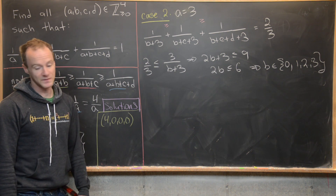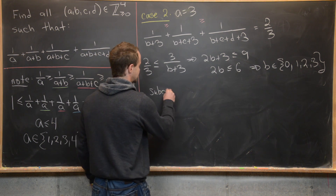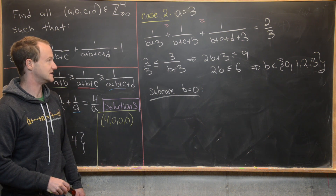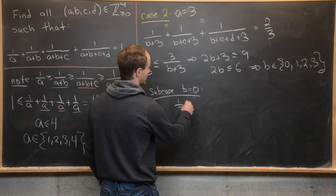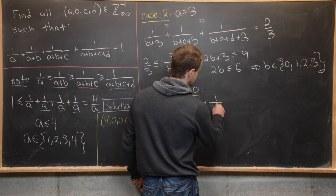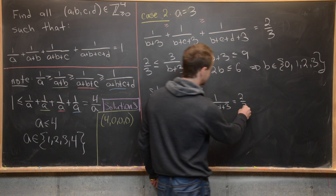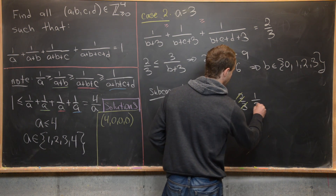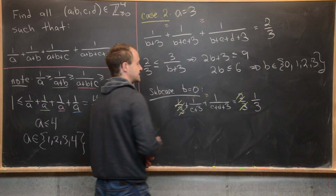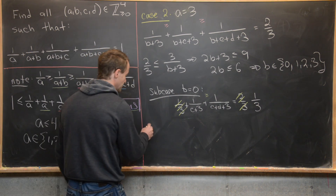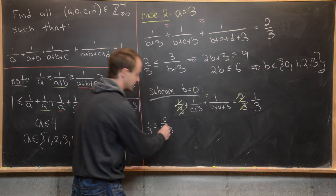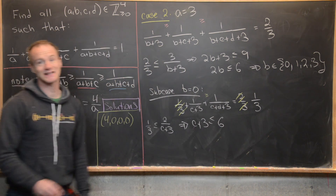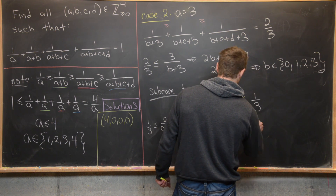Subcase B = 0: The equation collapses to 1/3 + 1/(C+3) + 1/(C+D+3) = 2/3. Subtracting 1/3 from both sides leaves 1/(C+3) + 1/(C+D+3) = 1/3. Playing the inequality game again: 1/3 ≤ 2/(C+3), so C+3 ≤ 6, giving C ≤ 3.